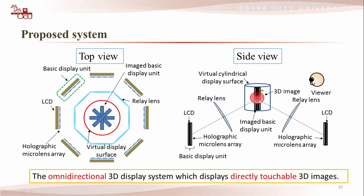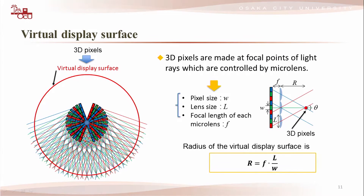The display surface of the proposed system is a virtual screen which is composed of multiple 3D pixels. The 3D pixels are spaced in cylindrical shapes, so the virtual screen is not a physical obstruction. The observed 3D images are directly touchable. The 3D pixels are made at focal points of the light rays which are controlled by the micro-lens.